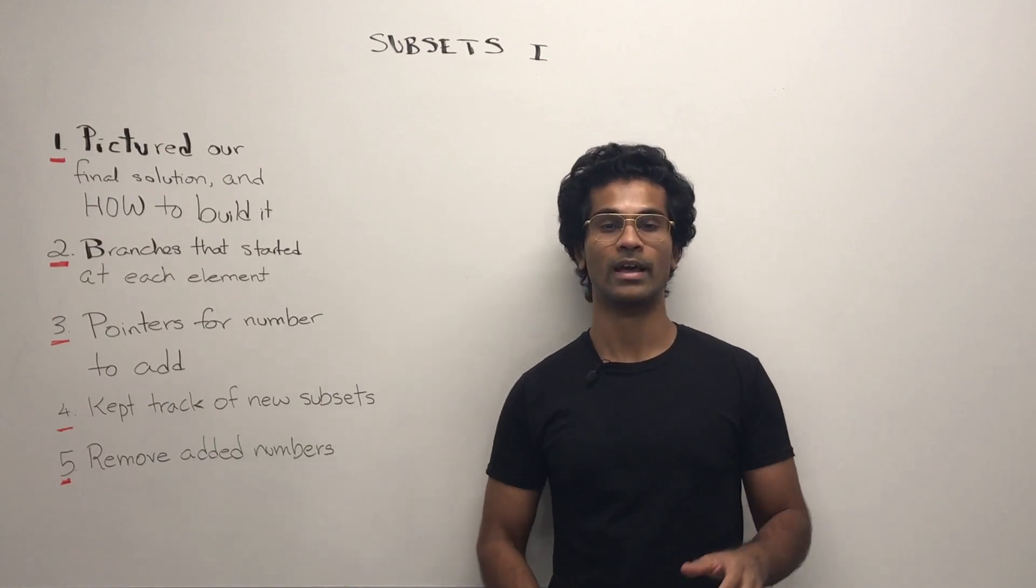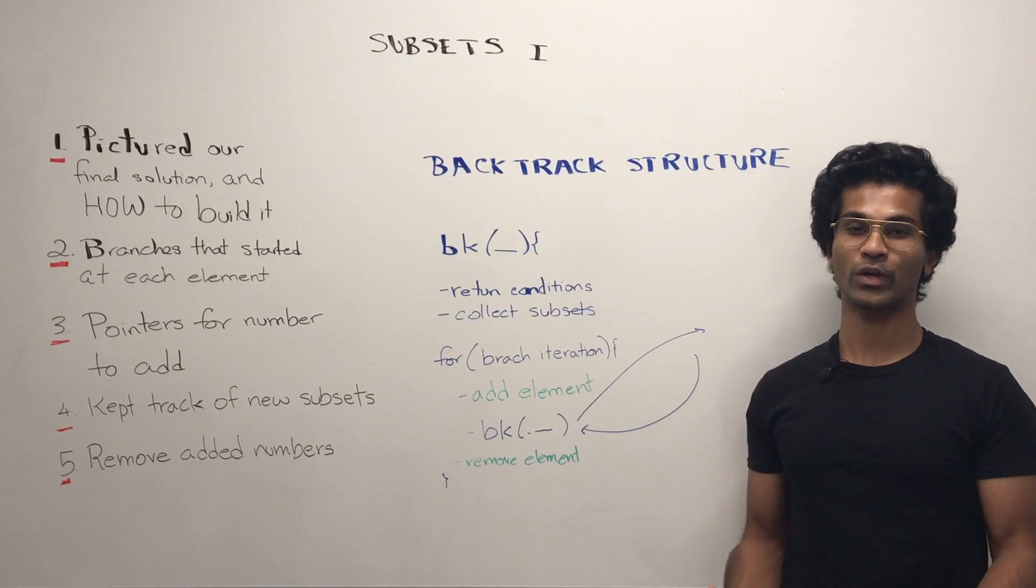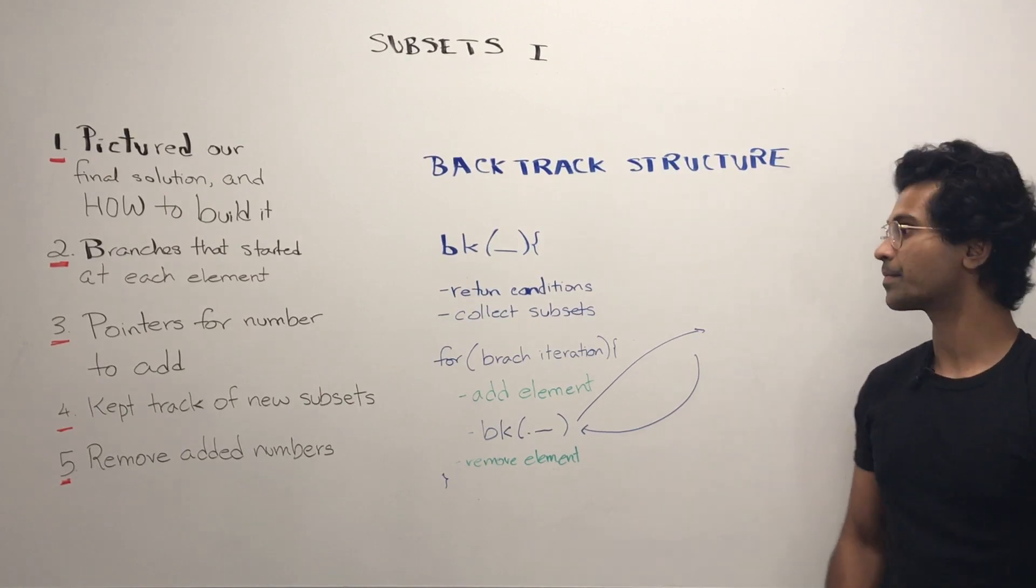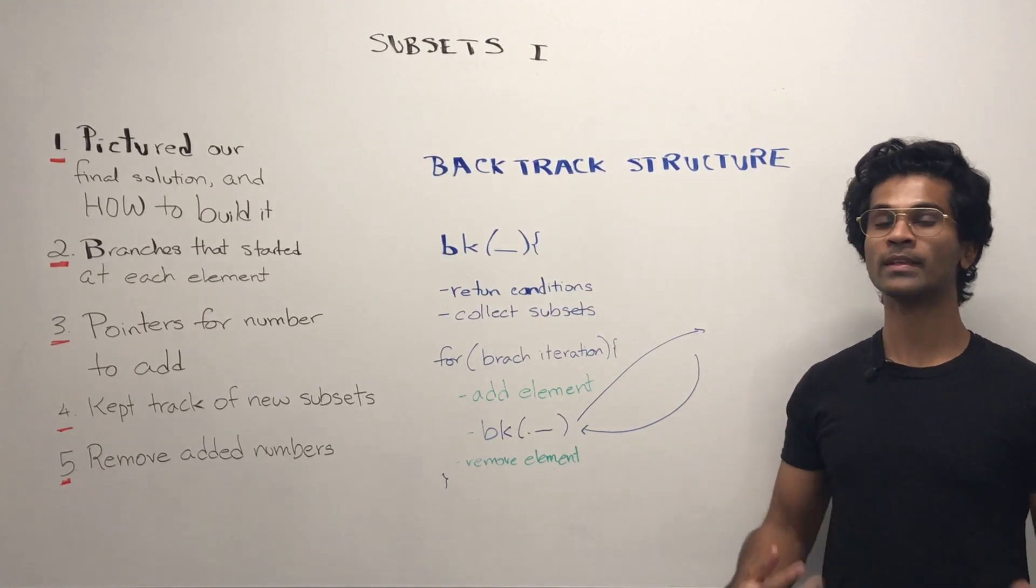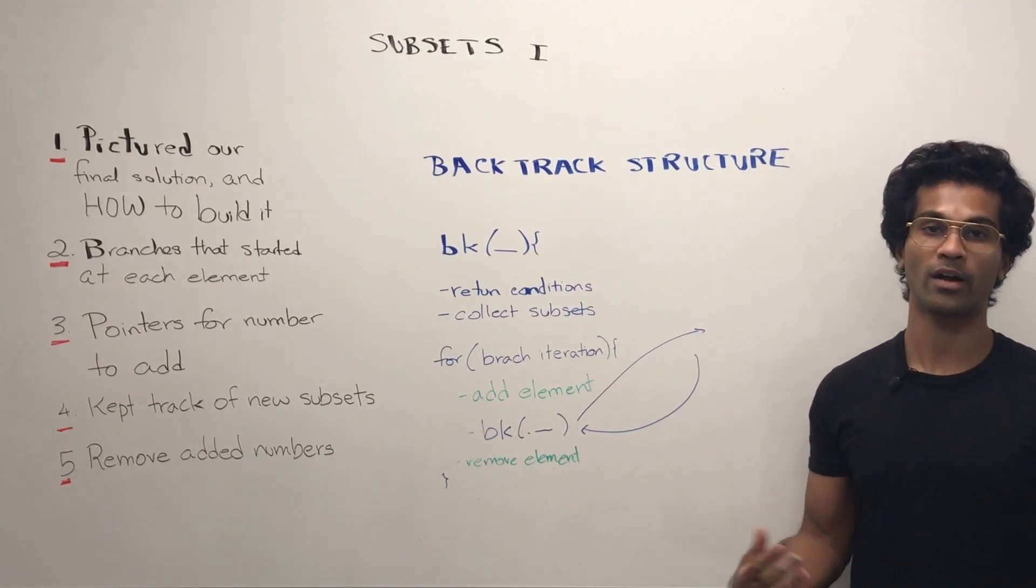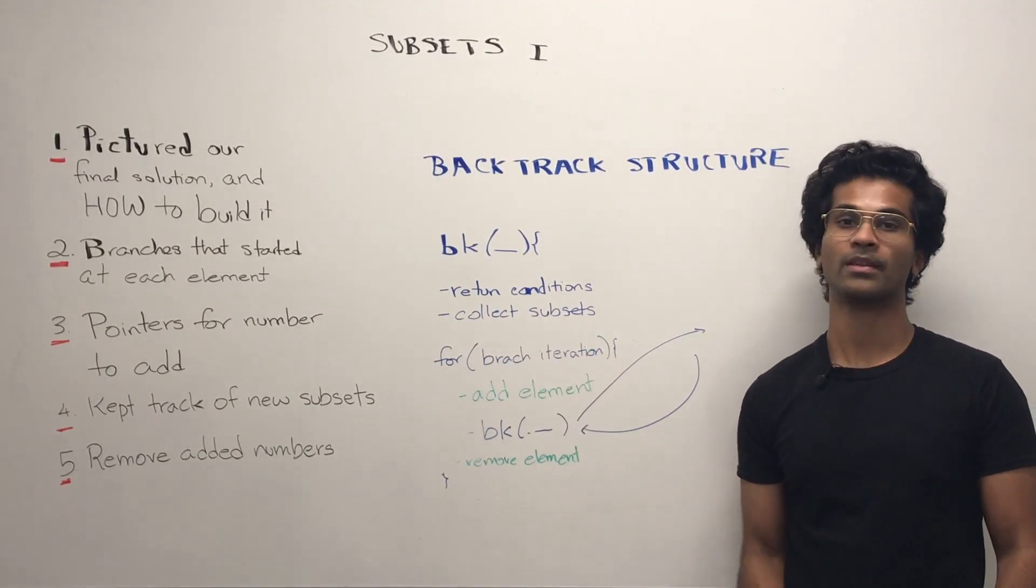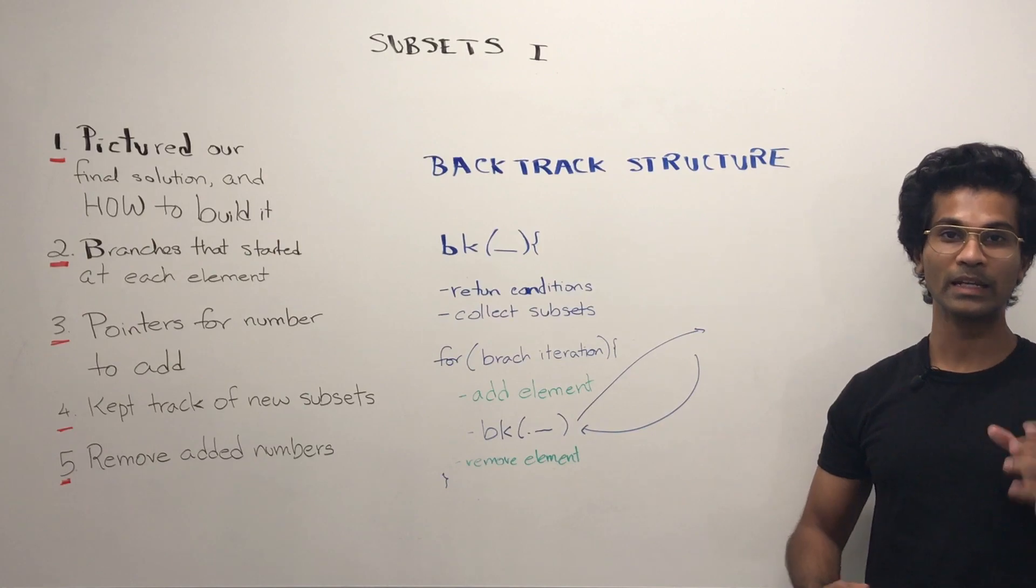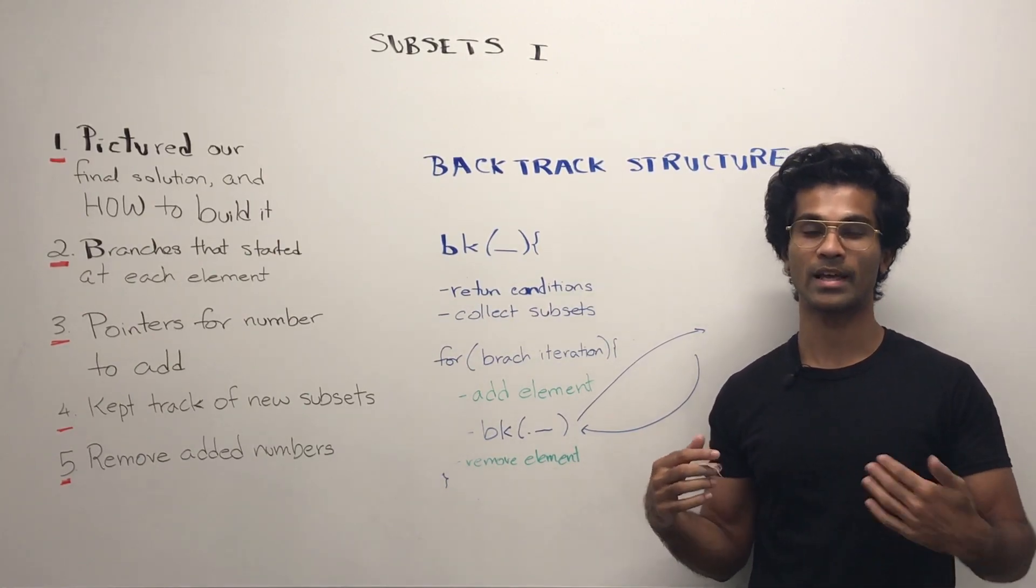Now let's look at the structure of the backtracking. The structure of our backtracking algorithm is going to look like this. We begin our recursive function and first we write the conditionals for returning so we don't have a stack overflow or we're out of bounds or something like that. Then we collect our subset. This is the part at the beginning of each recursive stack that we collect the temporary set that's been generated.